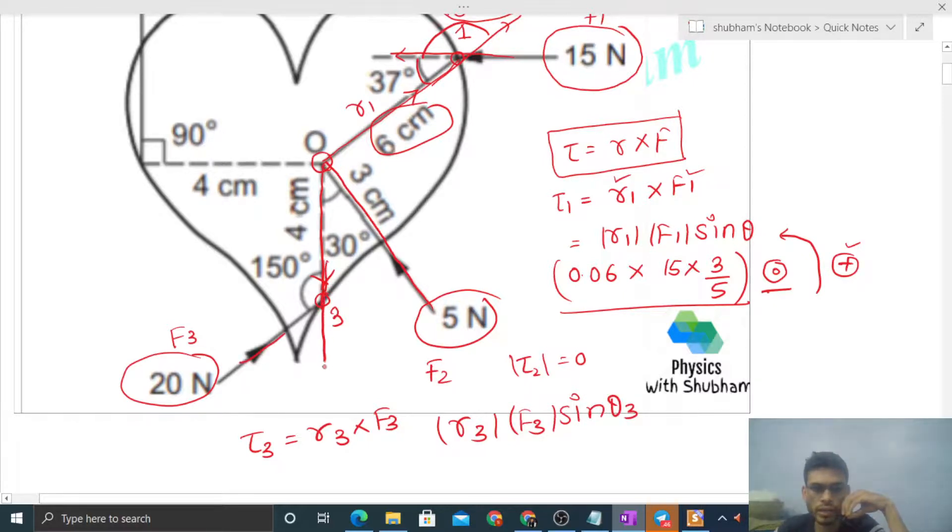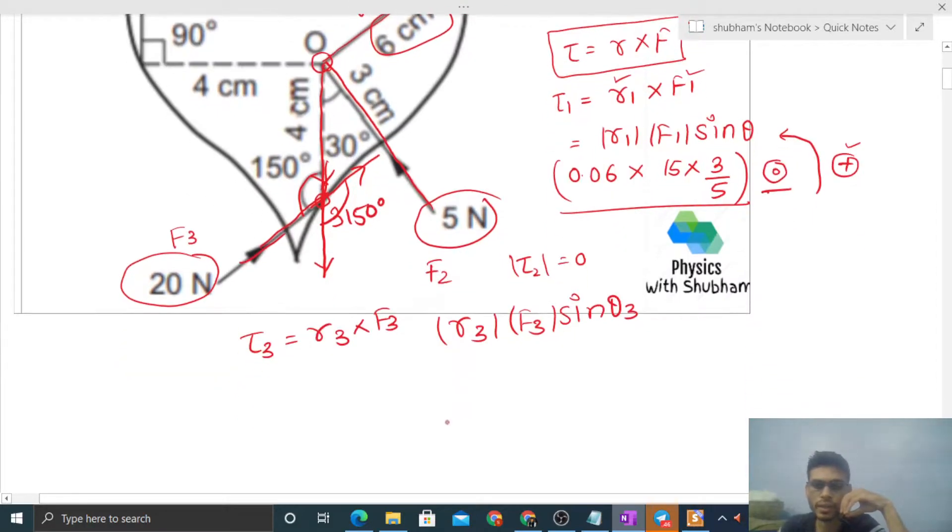This is the R direction and this is the F direction, so this angle is 150. So R3's magnitude is 4cm, so 0.04, times F3's magnitude that is 20, times sine of 150. That is 180 minus 30, so that's nothing but sine 30, which is 1 by 2. And the direction is R cross F.